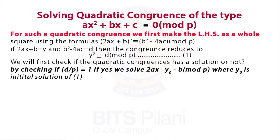If yes, we solve 2ax ≡ y₀ - b (mod p), where y₀ is the initial solution of equation 1.